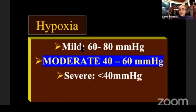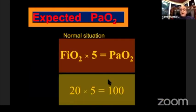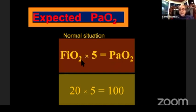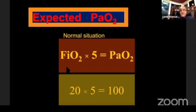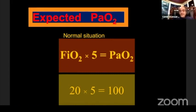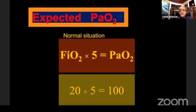Hypoxia grades: mild is 60 to 80 mmHg, moderate is 40 to 60 mmHg, and severe hypoxemia is less than 40 mmHg. You have to mention in your ABG how much FiO2 you're using — you can estimate the expected arterial oxygen pressure by multiplying FiO2 by 5. If a patient receives 20% FiO2, expected PaO2 is 100 mmHg. If 50% FiO2, expected is 250 mmHg. If 100% FiO2, expected PaO2 is about 500 mmHg. If less, the patient may have an oxygenation problem.